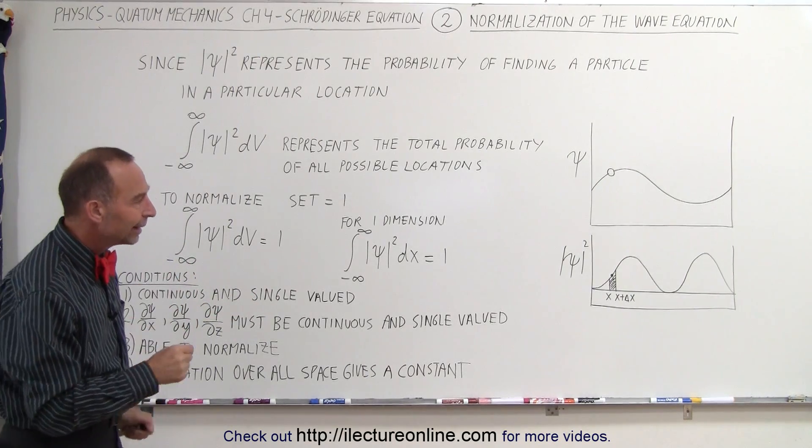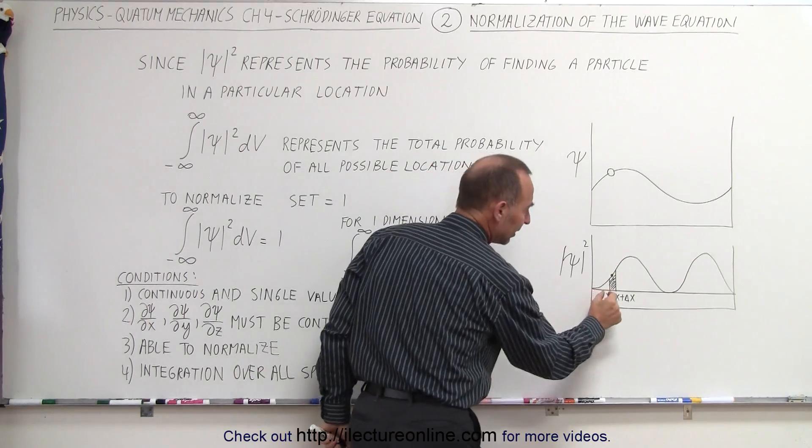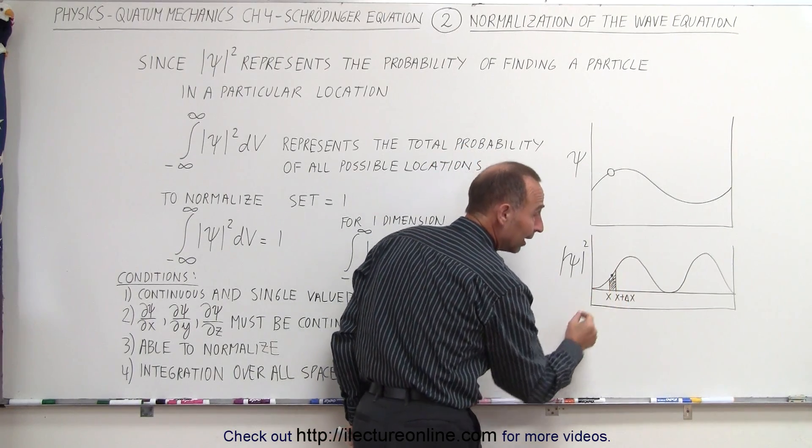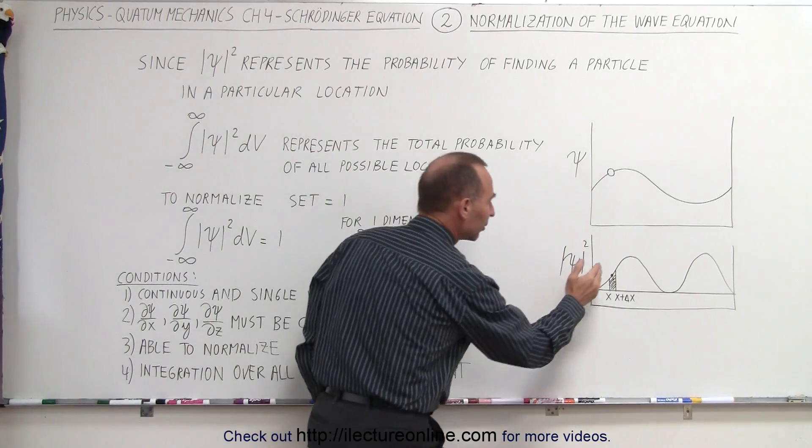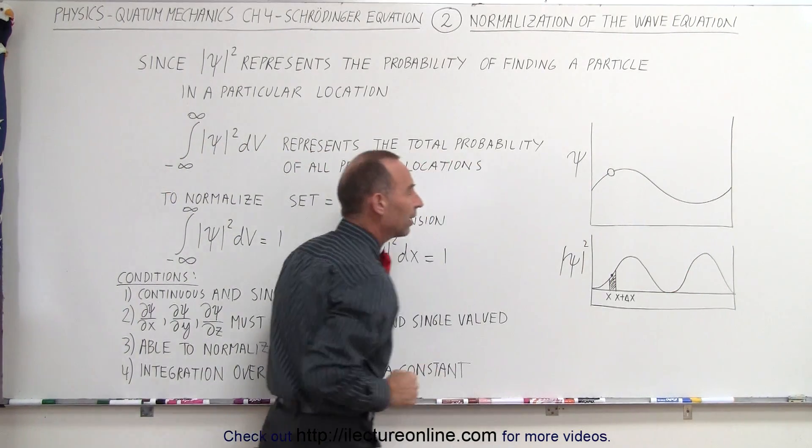Once we do that, any snippet of probability, let's say we want to find the particle in this particular region, will then be a small fraction of one, the probability of finding the particle there rather than everywhere else.